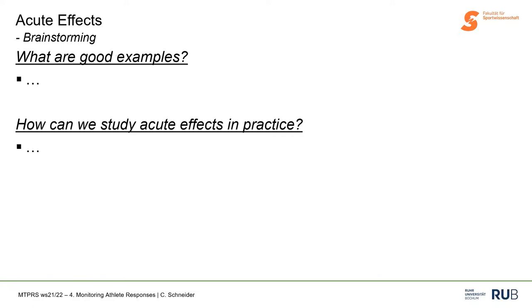When we look at acute effects, let's do some brainstorming. What are good examples for acute effects that we could be interested in? And how can we study acute effects in practice? If we are not looking at a study but at practice, and we try to facilitate monitoring, how could we try to identify acute effects in practice?